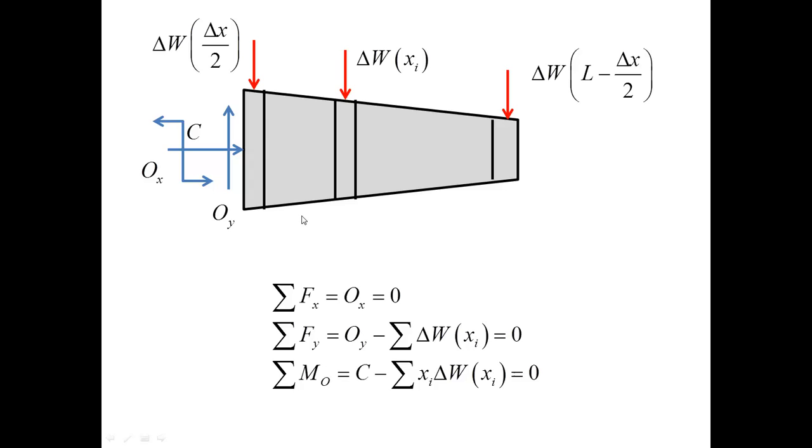Similarly, for the moment equation, I have the couple counterclockwise, and all elementary forces, delta W, have negative moments, and the arm for each force is XI.